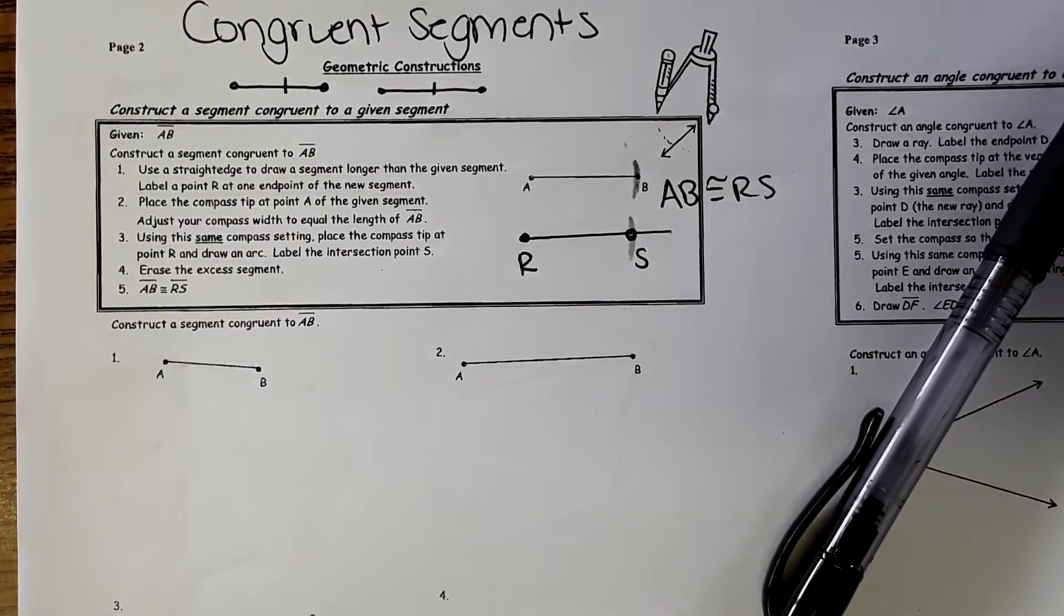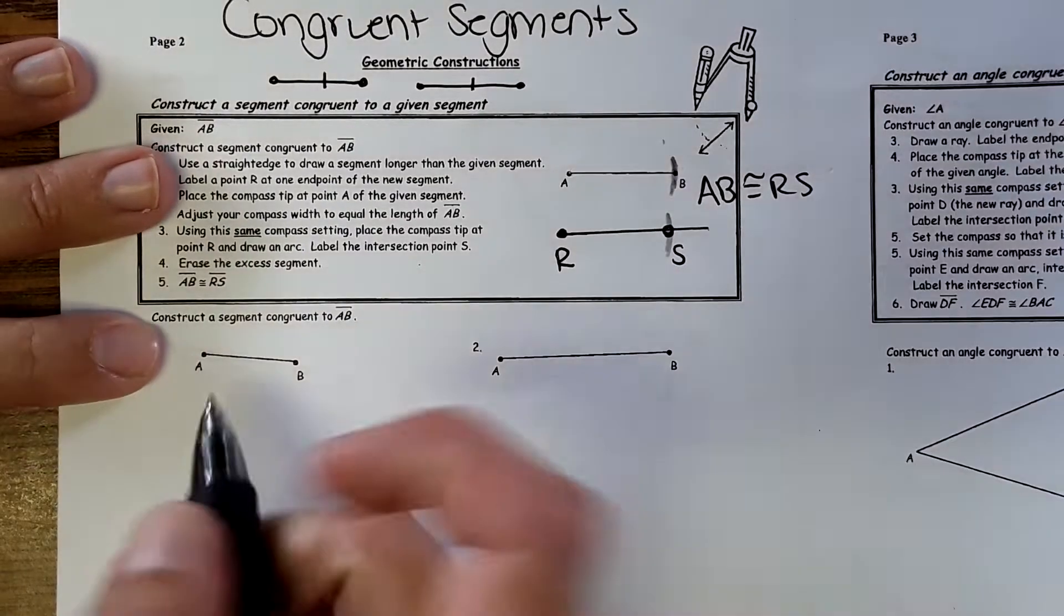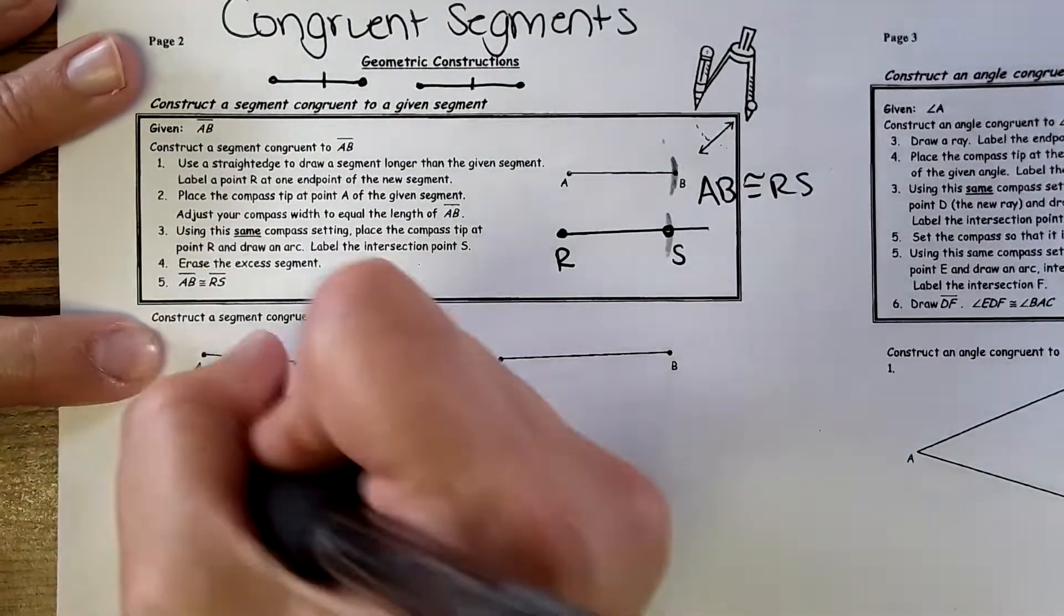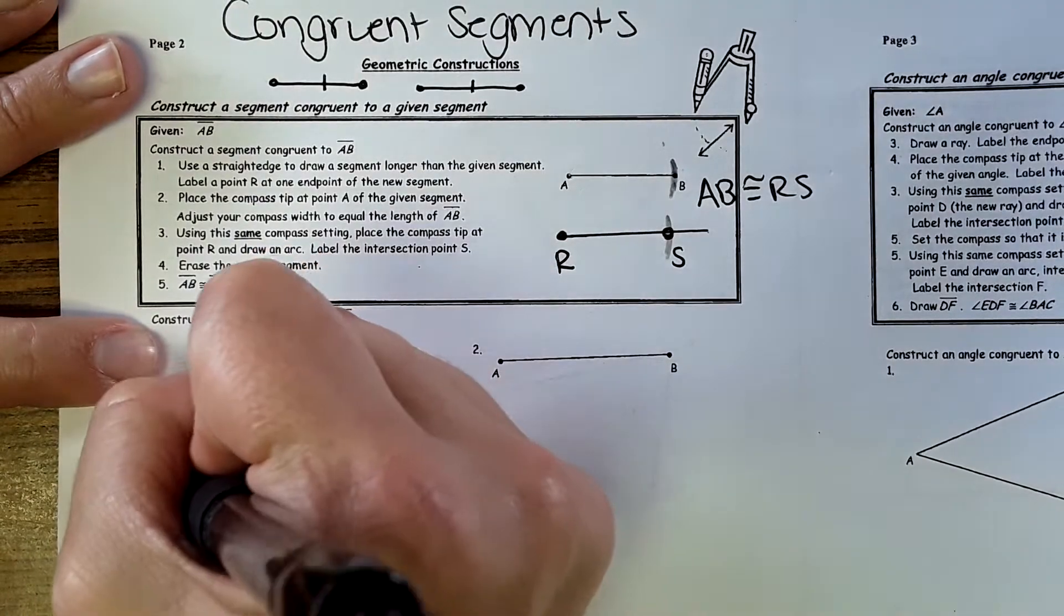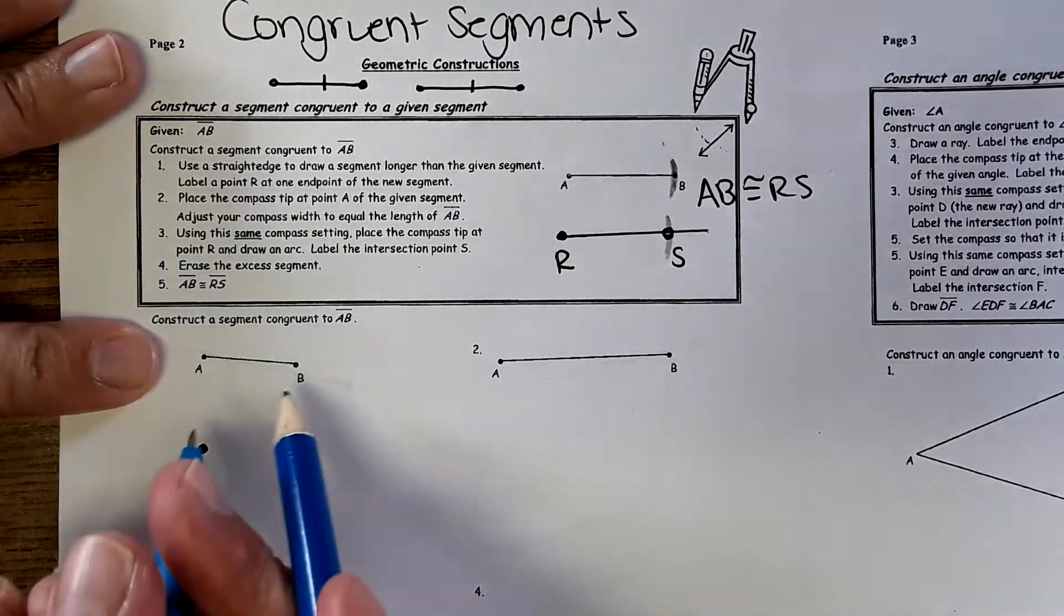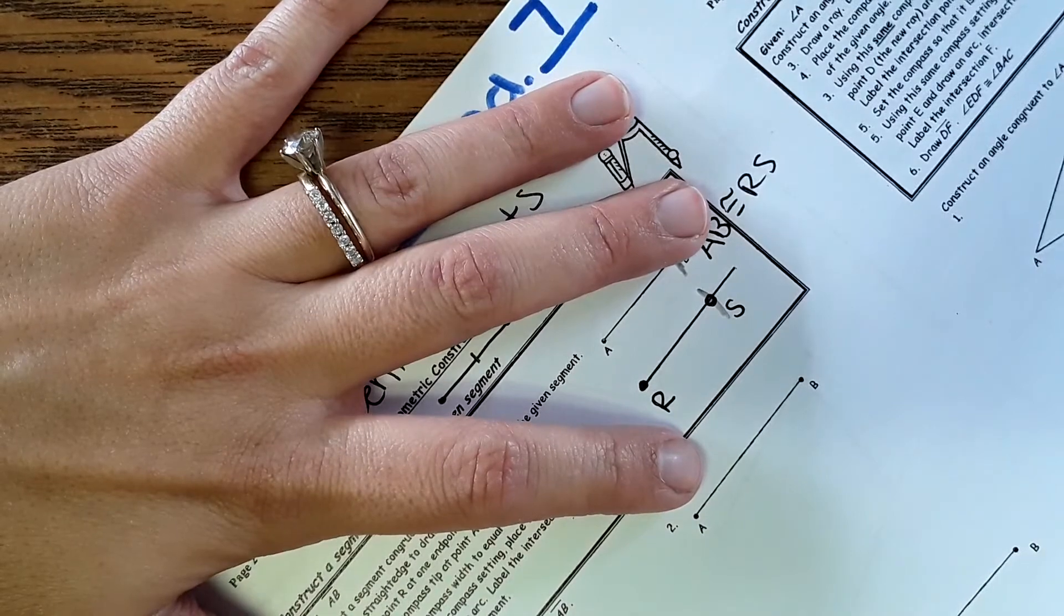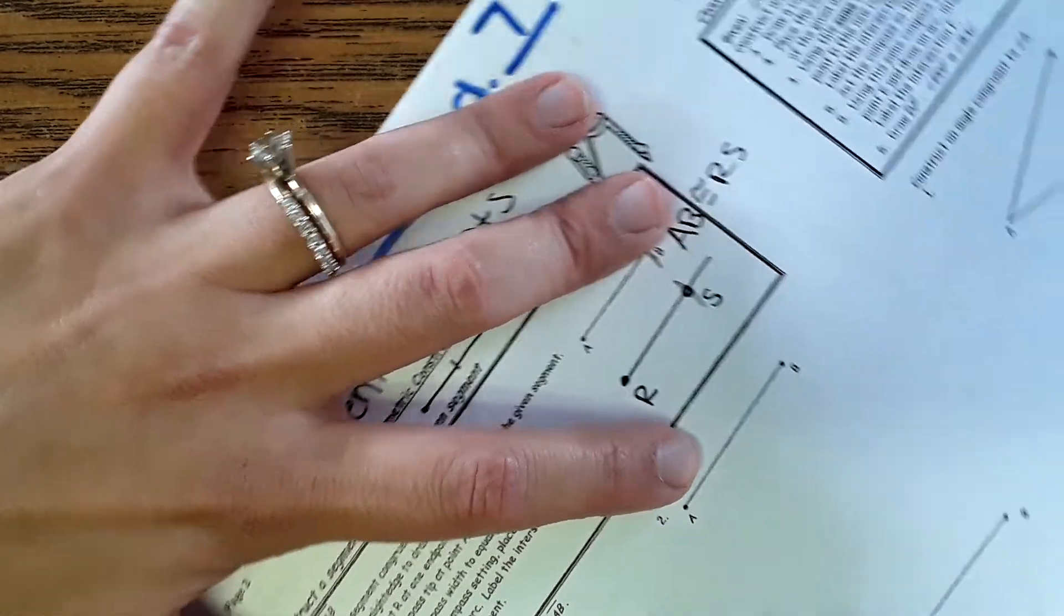Now we're going to practice that another four times. Here's segment AB, we're making a segment congruent to it. So first step: point R. Then measure the distance between A and B, so adjust this so it's that distance and make an arc at B.